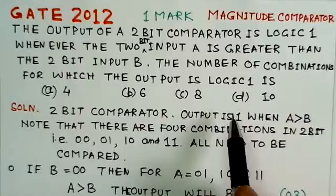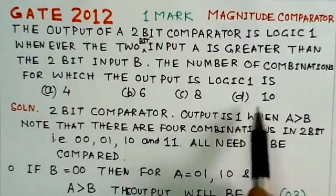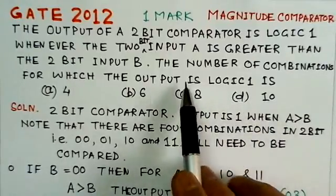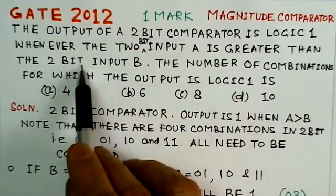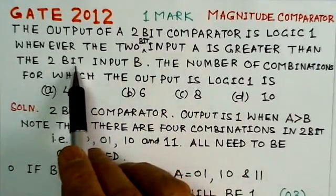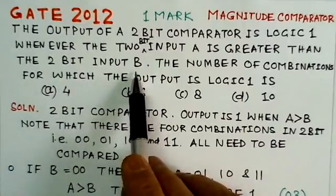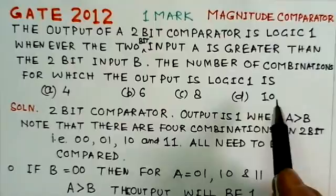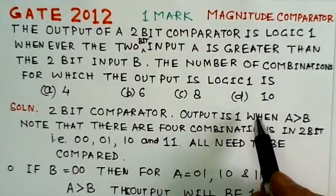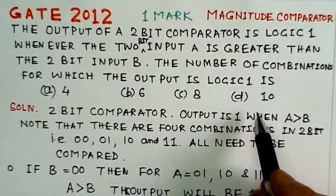...and it says that when A is greater than B, then you get 1 as the output. Then we have to find the number of combinations for which the output is logic 1, that means when A is greater than B.